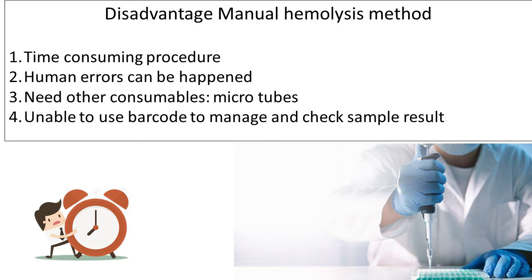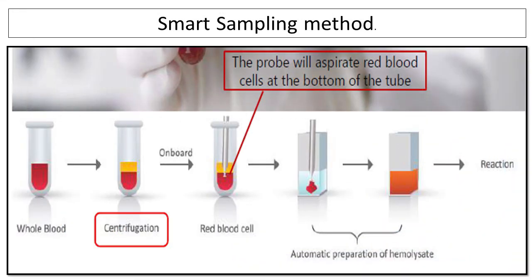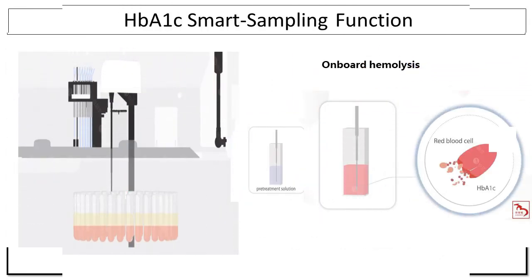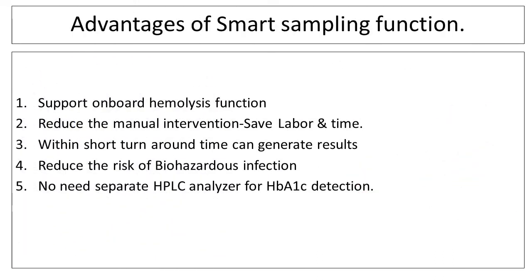In the smart sampling method, the probe will aspirate red blood cells at the bottom of the tube and automatically prepare the hemolysate — we call this on-board hemolysis. If your biochemistry instrument includes the smart sampling method, it supports on-board hemolysis function, reduces manual intervention, saves labor and time, generates results within a short turnaround time, reduces the risk of biohazardous infection, and eliminates the need for a separate HPLC analyzer for HbA1c detection.